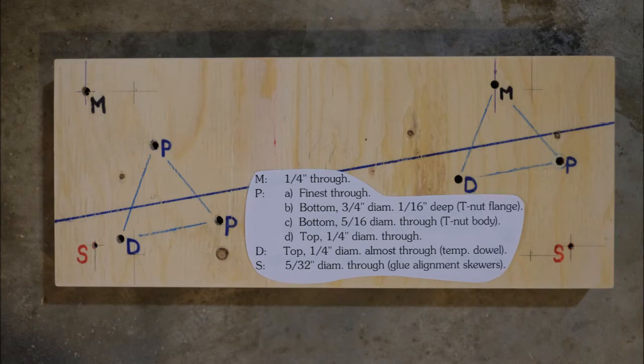For the body of the t-nut you're going to need a five sixteenths inch hole through the bottom panel only. If you can stop short of going through the bottom panel that's even better. Last you need a one-quarter inch through hole made down from the top all the way through into the opening of the five sixteenths inch hole that's at the bottom. That's it for the P holes.